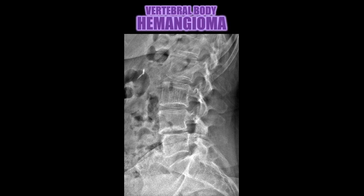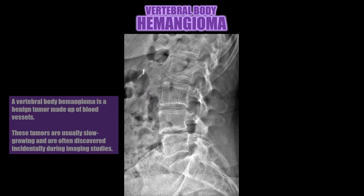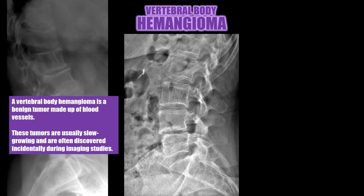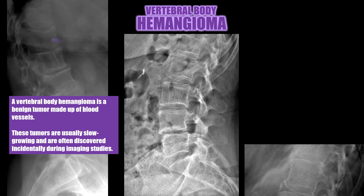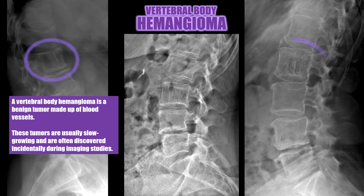Case number five is a vertebral body hemangioma at L3. You'll notice an increase in the vertical trabecular markings, or accentuated vertical trabecular markings, causing that jail bar appearance of the L3 vertebral body. A vertebral body hemangioma is a benign tumor made up of blood vessels. These tumors are usually slow growing and are often discovered incidentally during imaging studies.